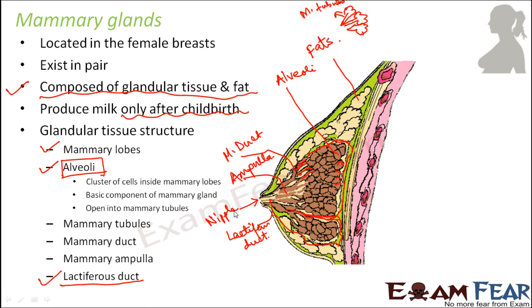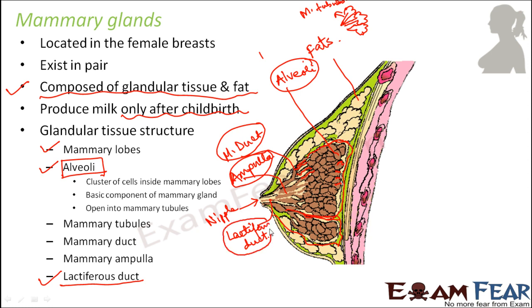Each complex gland has several simple glands. A simple gland is one which has just one lactiferous duct. A complex gland is one which has multiple lactiferous ducts which join together to form a common duct that opens into the nipple. So in human beings: alveoli secrete milk, open into mammary tubules, which open into mammary ducts, which open into ampullae, which open into lactiferous ducts, which finally open into the nipple.